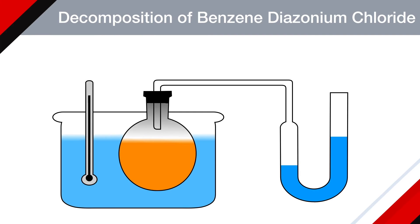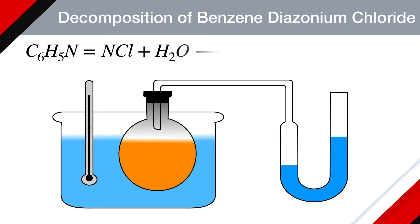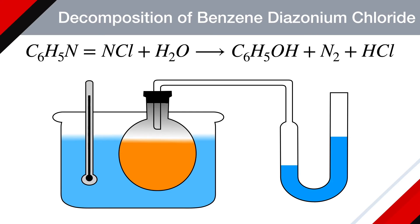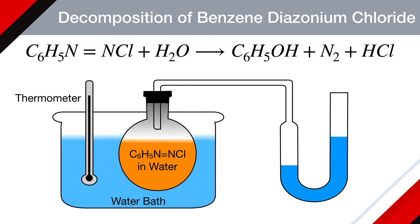When benzene diazonium chloride dissolved in water is heated in a water bath, it liberates nitrogen gas, forming phenol and HCl in the solution. This nitrogen gas can be collected in a gas burette. As more and more benzene diazonium chloride decomposes, more and more nitrogen gas is formed.